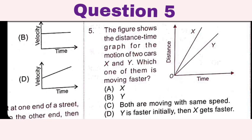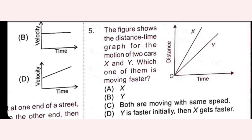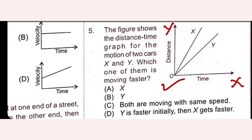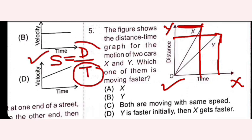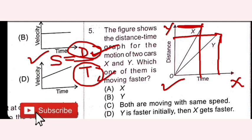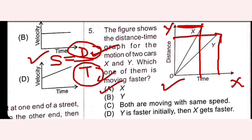The figure shows the distance-time graph for the motions of two cars X and Y. We need to tell which one is moving faster. Distance is on the y-axis and time on the x-axis. Car X has covered a greater distance in less time compared to car Y. Since speed equals distance divided by time, a higher distance with less time means higher speed. So X is faster, and option A is the right option.